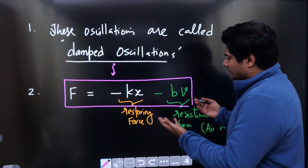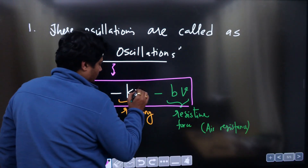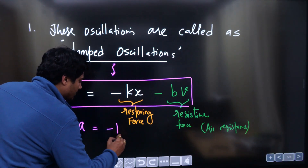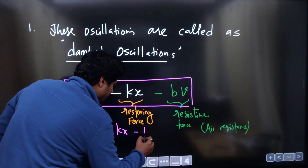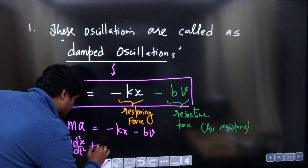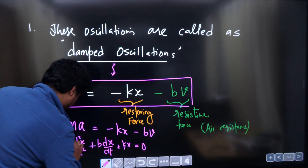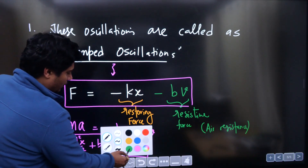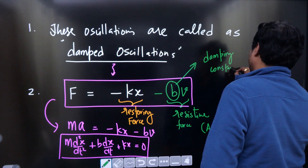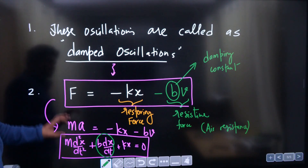In the differential equation for damped oscillation, F equals M times A, so we write: M·(d²x/dt²) + B·(dx/dt) + Kx = 0. This is the differential equation for a damped oscillation. B here is called the damping constant. This extra term involving velocity distinguishes it from simple SHM.